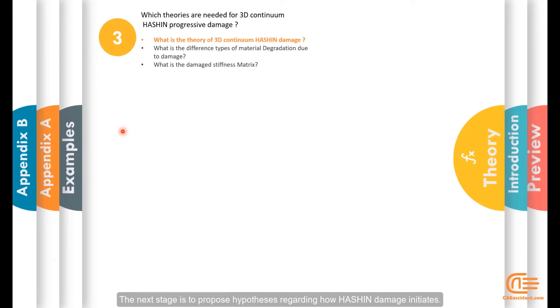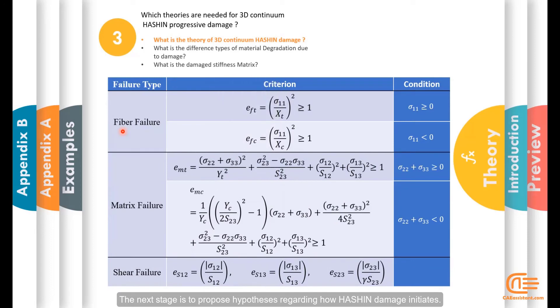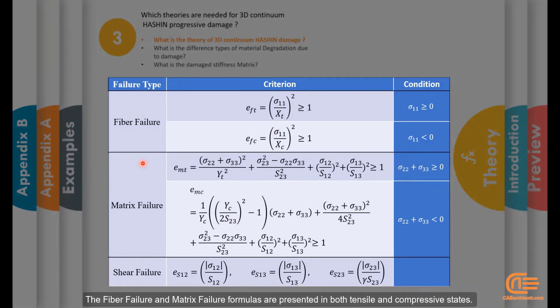The next stage is to propose hypotheses regarding how Hashin damage initiates. The fiber failure and matrix failure formulas are presented in both tensile and compressive states.